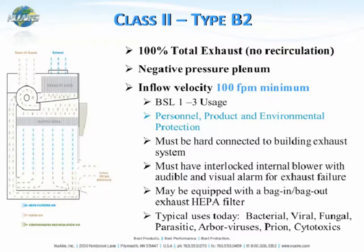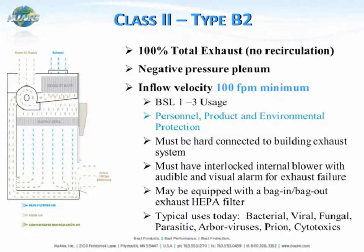From a Class II Type A2, we move to a Class II Type B cabinet, starting with the B2. This is 100% total exhaust — there's no recirculation within the cabinet like the Class II A1 and A2 cabinets. Because it's 100% total exhaust, Type B cabinets must be hard connected to the building exhaust system and must be interlocked with the internal blower with audible and visual alarms for exhaust failure. If there isn't sufficient exhaust flow, the cabinet itself will also shut down to guard against pressurizing the exhaust ductwork within the facility.